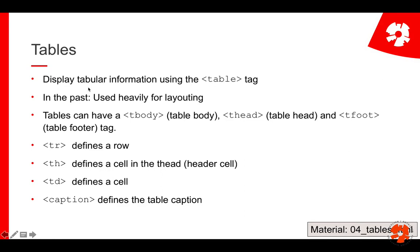Tables are really just for displaying tabular information. Tables can have three optional tags: a tag indicating the body (the content), the heading (the title row and column names), and the footer. You don't need those, but they add semantic information. They tell the browser what is body information and what is heading, and that can be used for styling — for example, giving the heading bold-faced columns.